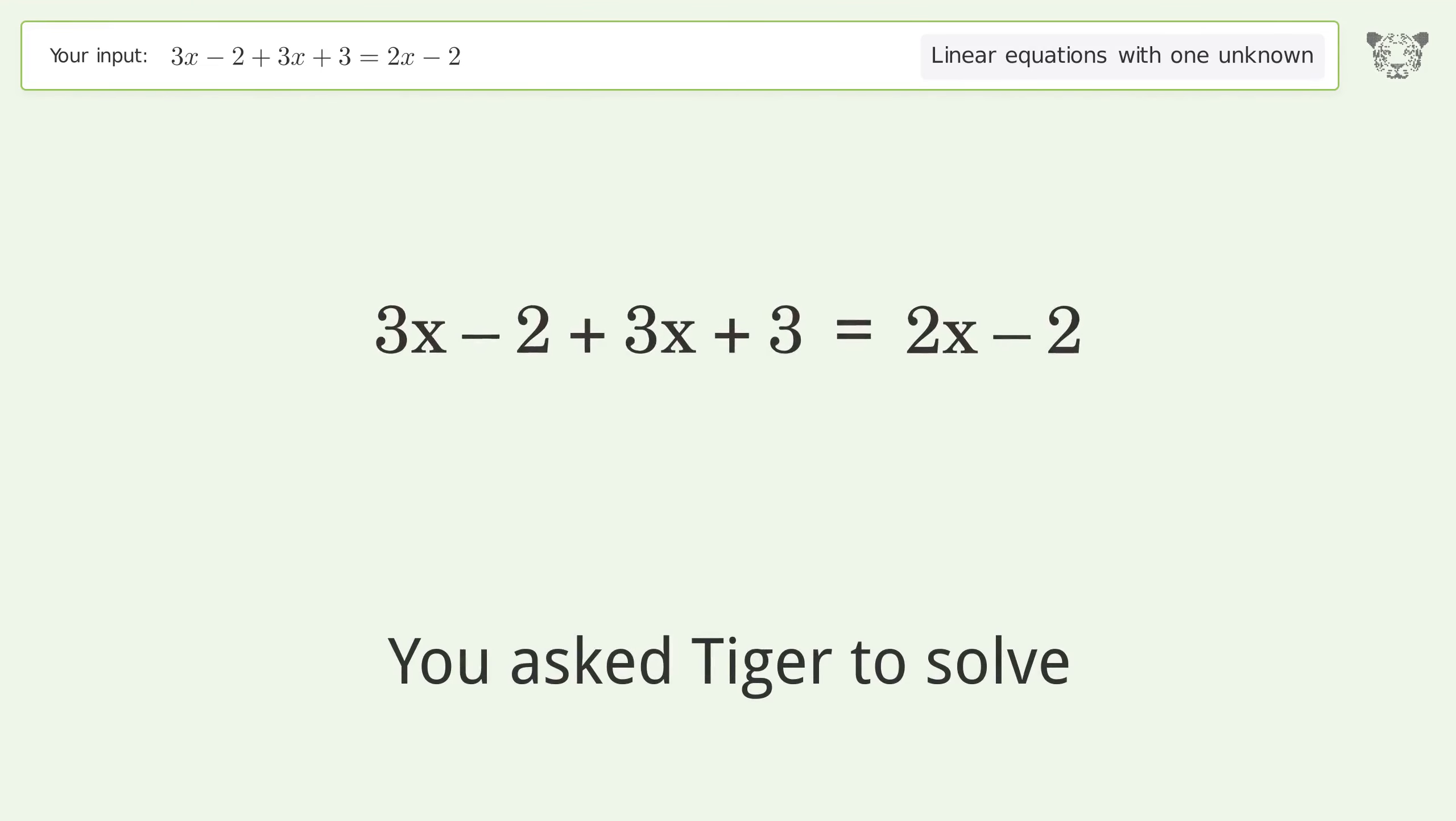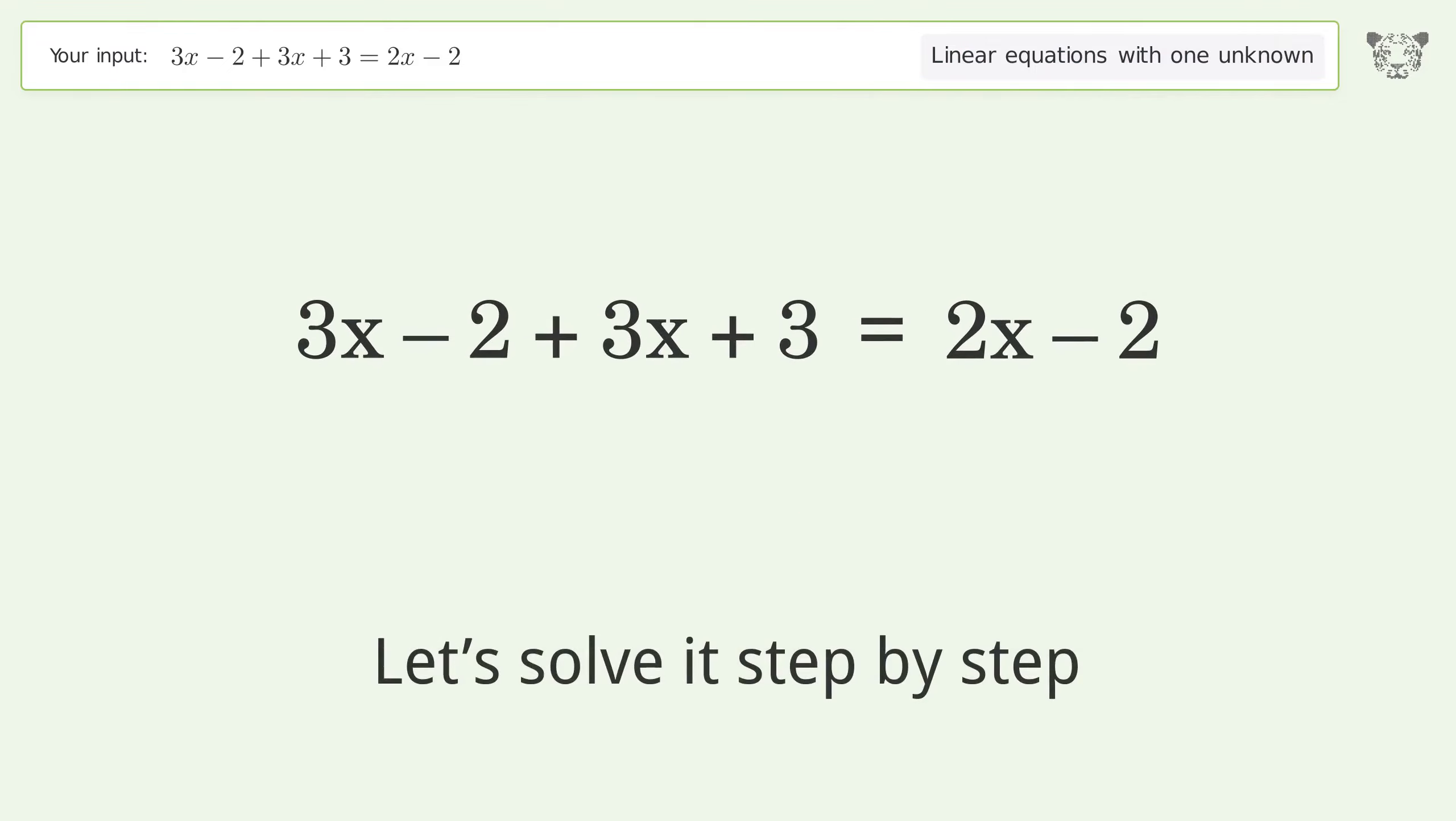You asked Tiger to solve this. This deals with linear equations with one unknown. The final result is x equals negative 3 over 4. Let's solve it step by step.